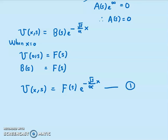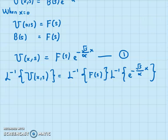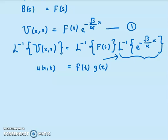So this gives the solution U(x,s) = F(s)·e^(-sqrt(s)/alpha · x). This is not done yet because we want to find u(x,t). We need to take the inverse Laplace of U(x,s). That gives us the inverse of F(s) — which is f(t) — multiplied by the inverse of e^(-sqrt(s)/alpha · x), which we call g(t).